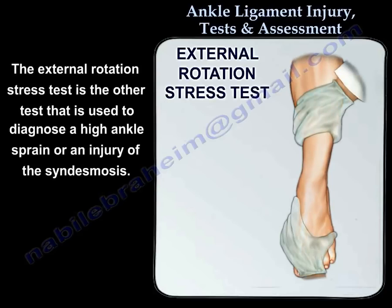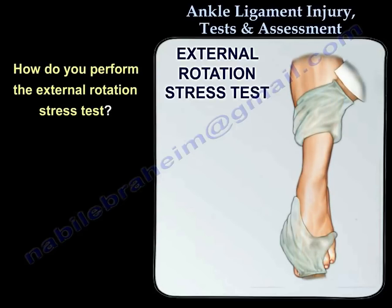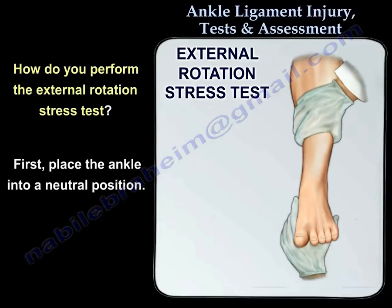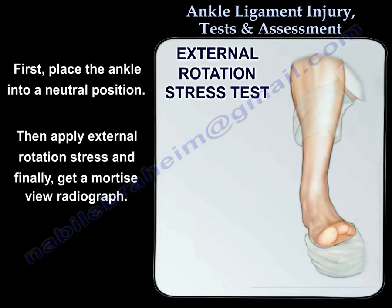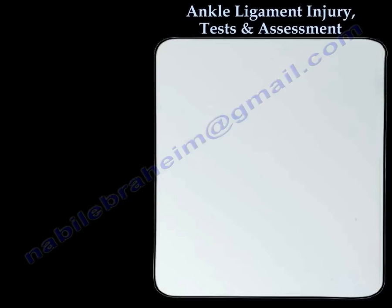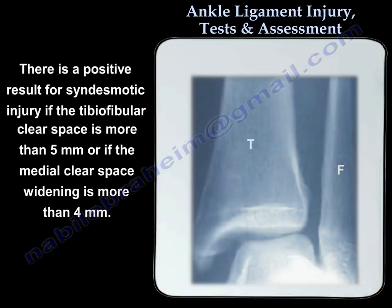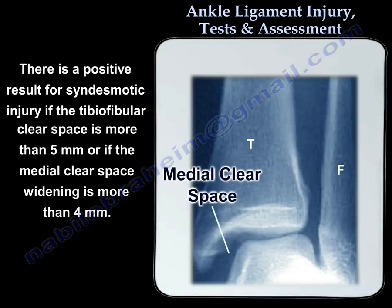The external rotation stress test is the other test used to diagnose high ankle sprain or injury of the syndesmosis. To perform the test, first place the ankle into a neutral position, apply external rotation stress, and finally get a mortise view radiograph. There is a positive result for syndesmotic injury if the tibiofibular clear space is more than 5 mm, or if the medial clear space widening is more than 4 mm.